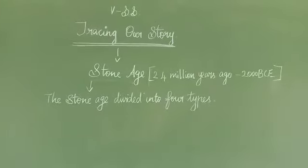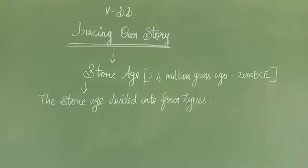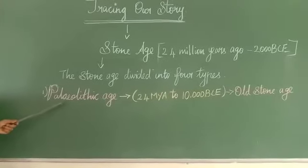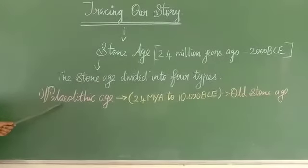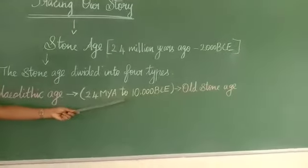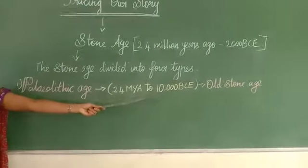The Stone Age is divided into four types. The first type is the Paleolithic Age. Paleolithic Age is from 2.4 MYA to 10,000 BCE. Paleolithic Age is also known as Old Stone Age.